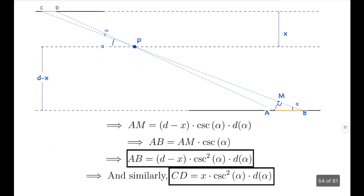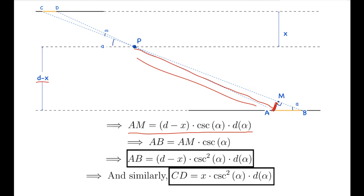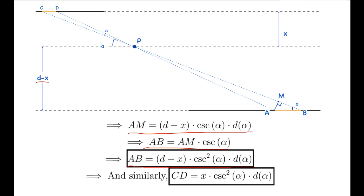First let's look at the lengths. We can say that AM equals (d minus x) times cosec(alpha) times d-alpha. This is because the relevant side length is (d minus x), this angle is alpha, so from the geometry this length is (d minus x) cosec(alpha), and since the angle is small, this becomes that length times d-alpha. So AM = (d − x) cosec(alpha) d-alpha.